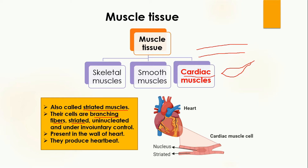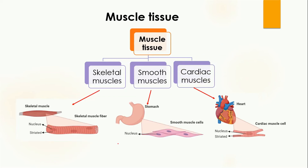Cardiac muscles are uninucleated, meaning they contain only one nucleus. They are under involuntary control, which is why the heart beats on its own and you cannot control the beating of the heart. Cardiac muscles are present in the wall of the heart and their work is to produce the heartbeat. That was all about muscle tissue, its types, and its examples. I hope this lesson was useful to you.